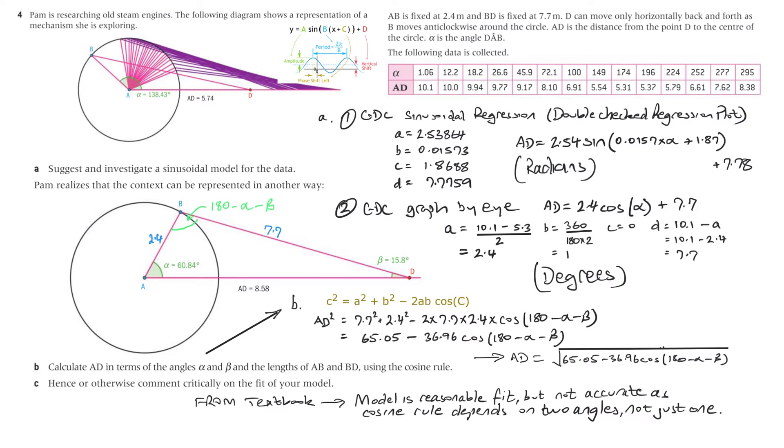Four. Pam is researching old steam engines. The following diagram shows a representation of a mechanism she is exploring. That's the wheel. AB is fixed at 2.4, that's the radius of the wheel, and BD is fixed at 7.7. So this BD, that doesn't change either. That length is set. Now D can only move horizontally back and forth, so that's only going to be moving up to there and back. As this comes up here, it's going to push this around the wheel. Now this B is going to go anti-clockwise around. If you can recall what a steam engine wheel looks like, as B moves anti-clockwise around the circle, AD is the distance from the point D to the centre of the circle. From D to the centre, that's going to change, and alpha is the angle DAB and that's obviously going to change.